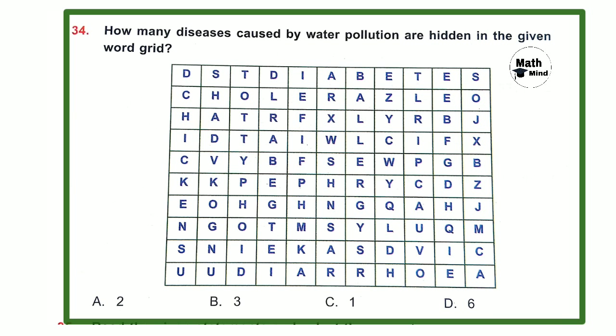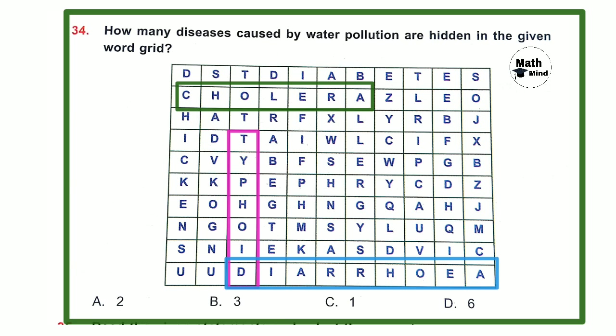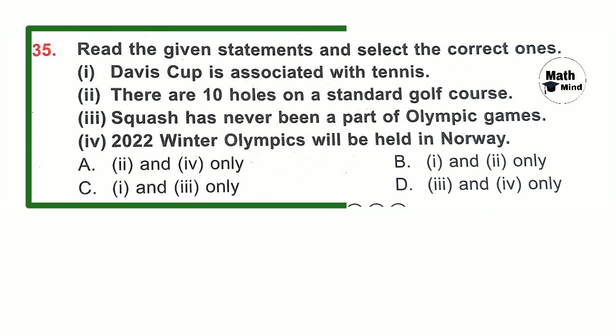Question number 34: How many diseases caused by water pollution are hidden in the water grid? Waterborne diseases include cholera, typhoid, and diarrhea. Cholera, typhoid, and diarrhea are found in the water grid. Total three waterborne diseases are seen — option B is correct.